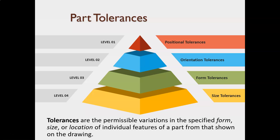You probably have an idea of what tolerances are, but this is a very good definition because it sets the ground rules. Tolerances are permissible variations — when we have tolerances on a drawing, the designer is saying that the size, form, or location of features with tolerance dimensions are allowed to vary within that tolerance. When you see the plus-minus tolerance or limit dimensions, those are acceptable, permissible variations. The designer is saying the part will function within that range of sizes.